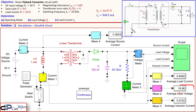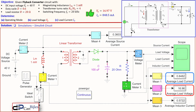The simulation results show an average load voltage of 16.96 V compared to our calculated 16.97 V — a very small difference, confirming the calculation. The average load current from simulation is 0.8482 A versus our calculated 0.8485 A — again a negligible difference, so everything checks out.